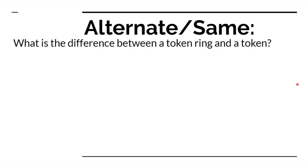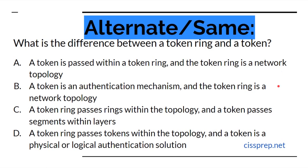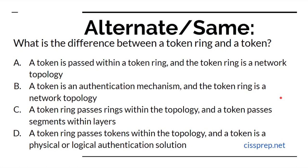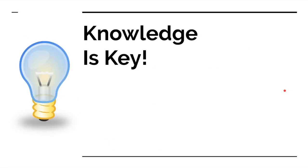Here's a question using similar or alternate wording: what is the difference between a token ring and a token? When you see a question like this, remember they're probably crossing domains. A token ring is a networking concept from domain 4, while a token in domain 5 is an authentication mechanism — it could be physical or logical. As it turns out, B is the correct answer. Knowledge of the CBK, the common body of knowledge, is what will really get you through this exam.